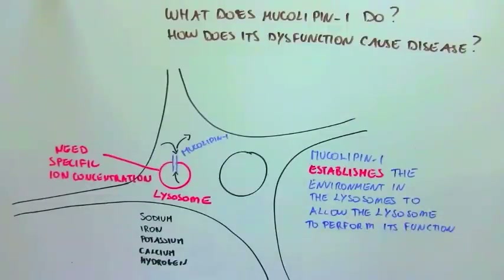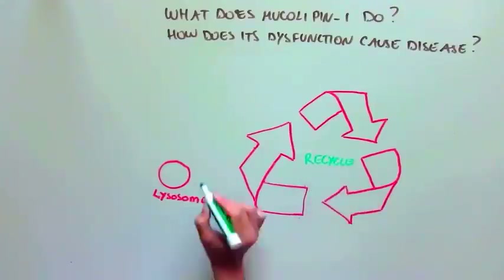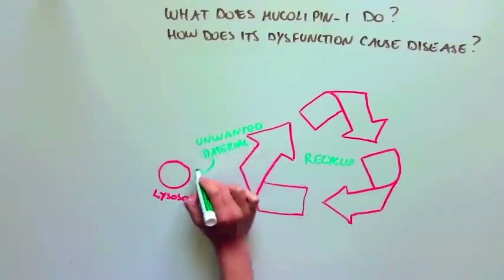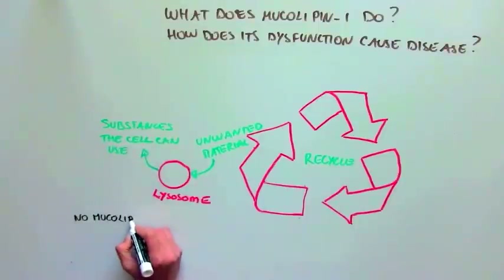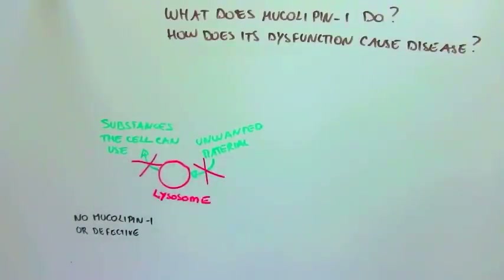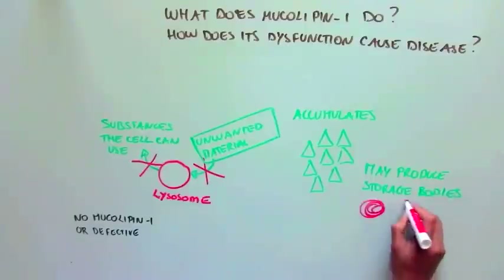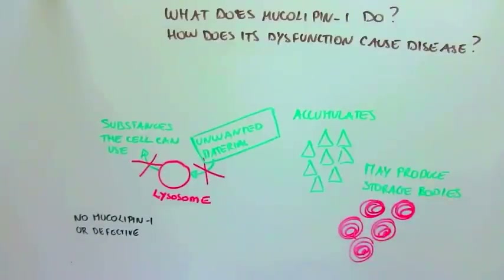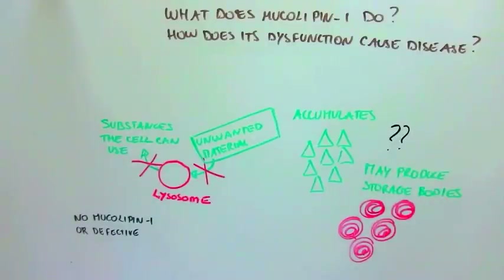So what is the function of lysosomes? Lysosomes can be seen as the recycling center of the cell, because they process unwanted material into substances that the cell can use. So if mucolipin-1 is defective or absent, the environment of the lysosome is not optimal to perform these recycling functions. This defect in recycling debris is thought to be responsible for the accumulation of the storage bodies in ML4, but this hasn't yet been proven. So it is important for us to understand what mechanisms could be causing the accumulation of these storage bodies in ML4.